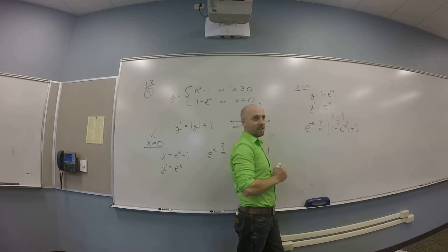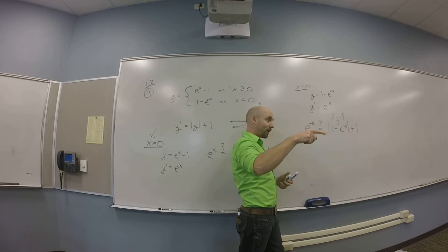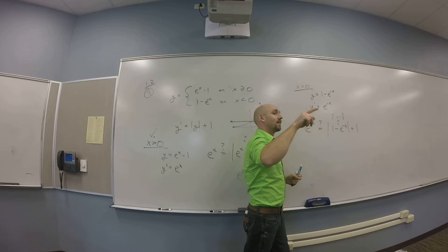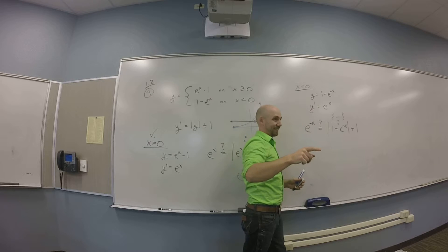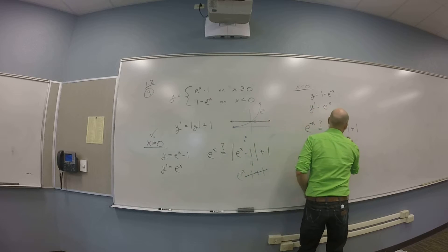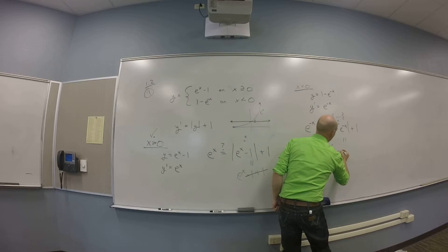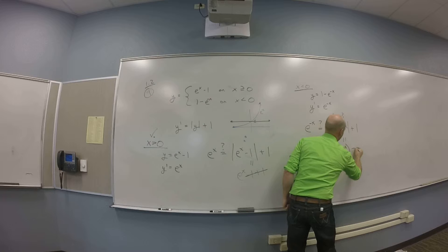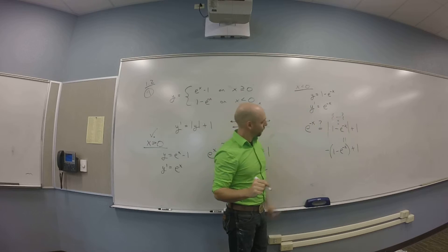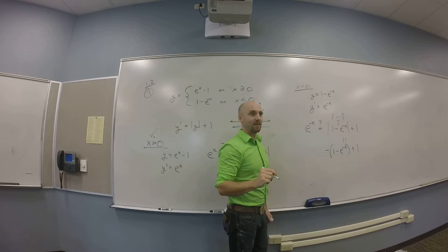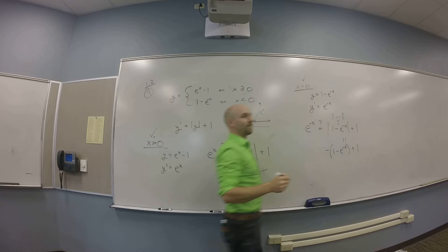So how does the absolute value function act on negative stuff? It turns it back to positive by slapping a negative sign on the whole thing. So you've got to slap a negative sign on all of 1 minus e to the minus x, plus 1. And what do you end up with? E to the negative x. Check — that works.